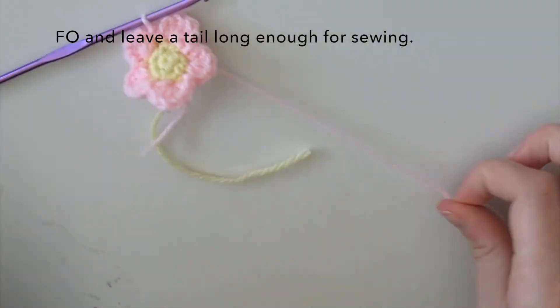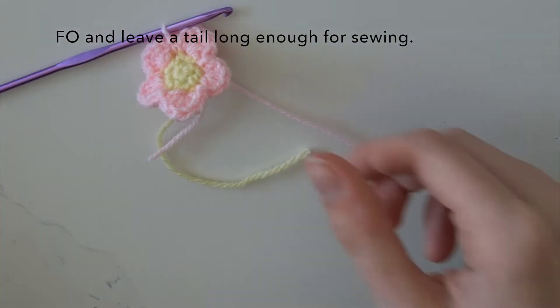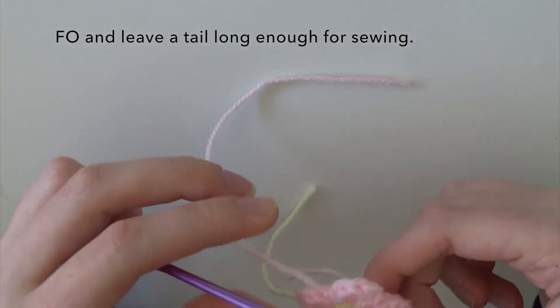Once you have reached the end of the round you just want to fasten off and leave a tail long enough to weave back into the flower.